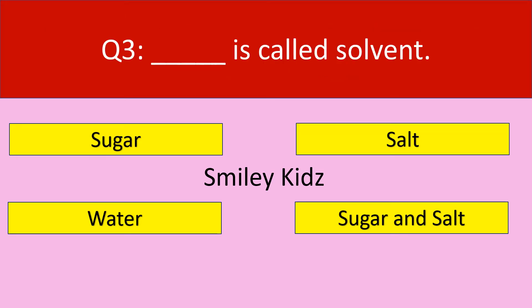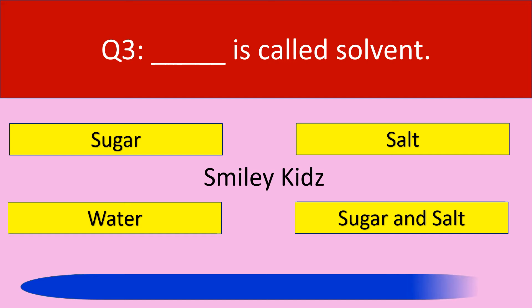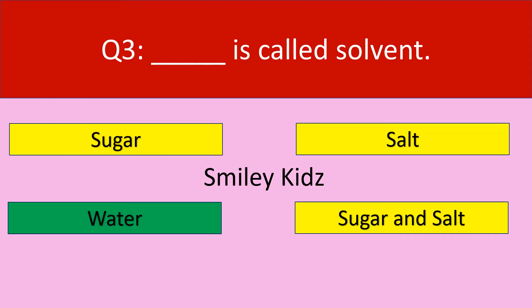Question number three. Dash is called solvent. Options are sugar, salt, water, and sugar and salt. Your time starts now. Your time is up. The correct answer is water. Water is called solvent.